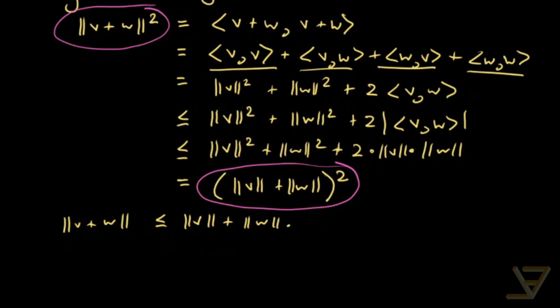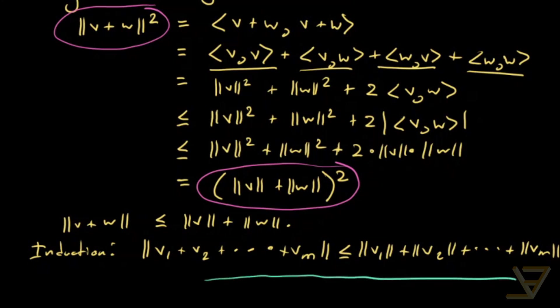You can generalize this to more vectors using induction. By induction we get ||v₁ + v₂ + ... + vₘ|| ≤ ||v₁|| + ||v₂|| + ... + ||vₘ||. Since n is the dimension, we need a different variable. So that's the generalized Euclidean triangle inequality. Thank you for watching, and I'll see you next time.